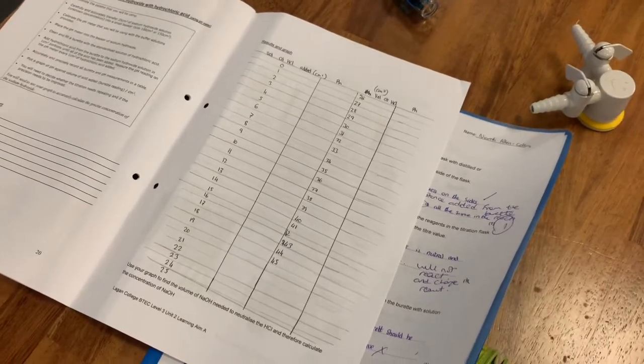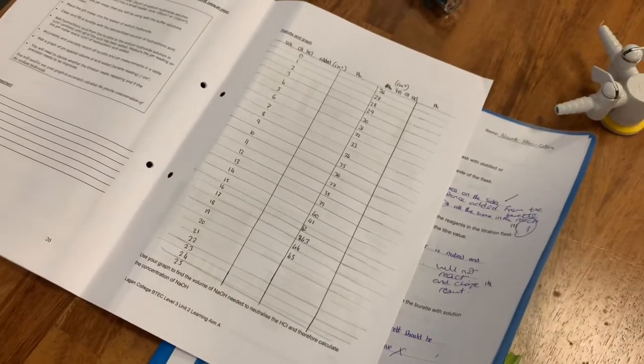Okay, so this is the first bit of the video of our experiment on page 21 in your book. You've got your results table done, we're following the method on page 20. And to start with, we're going to calibrate our pH sensor.